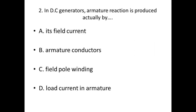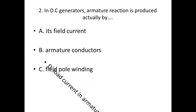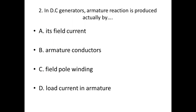Second bit: In DC generators, armature reaction is produced actually by dash. Option A: Its field current. Option B: Armature conductors. Option C: Field pole winding. Option D: Load current in armature. Answer — Option D: Load current in armature.